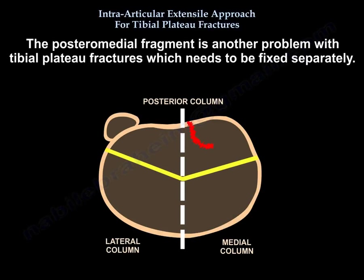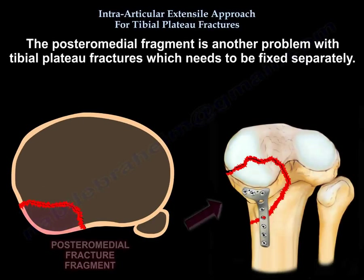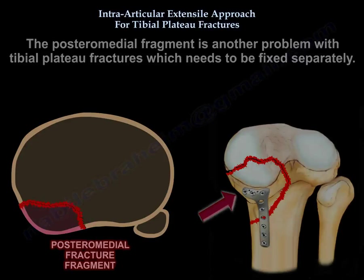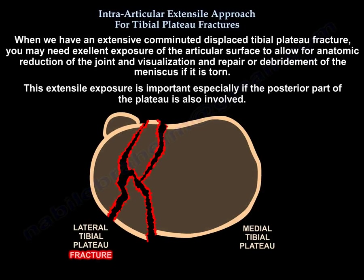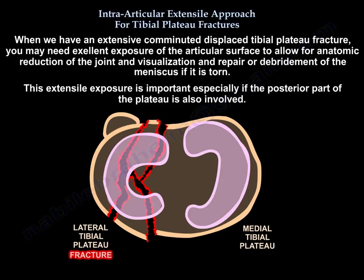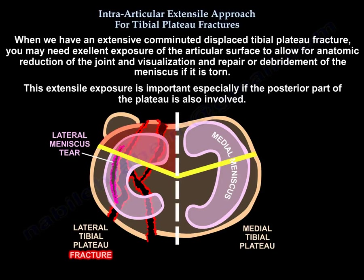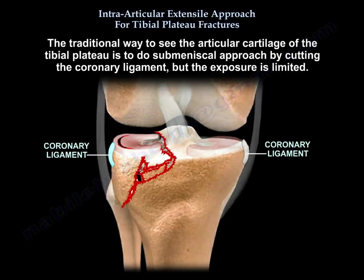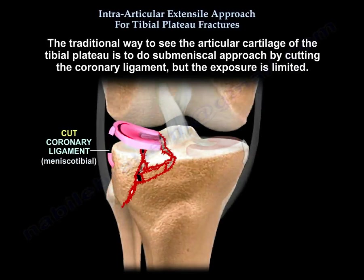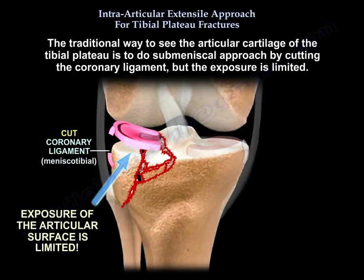Another problem with tibial plateau fracture is the posteromedial fragment, which needs to be fixed separately. When we have an extensive, comminuted, displaced tibial plateau fracture, you may need excellent exposure of the articular surface to allow for anatomic reduction of the joint and visualization and repair or debridement of the meniscus if torn. This extensile exposure is especially important if the posterior part of the plateau is also involved. The traditional way to see the articular cartilage is to do a submeniscal approach by cutting the coronary ligament — the meniscal tibial ligament — but the exposure is limited.